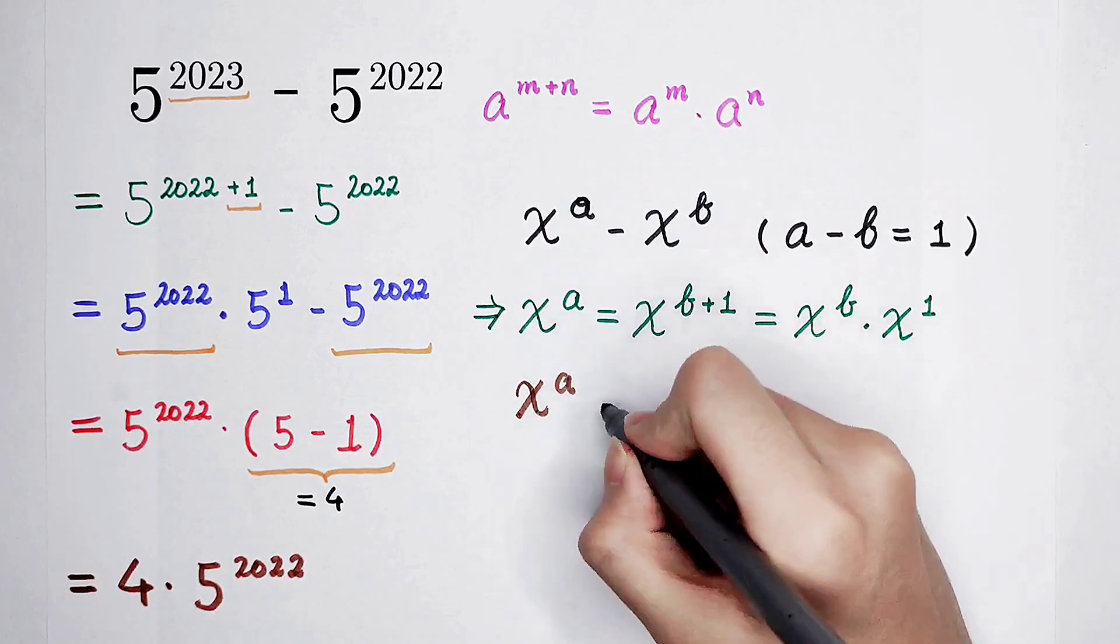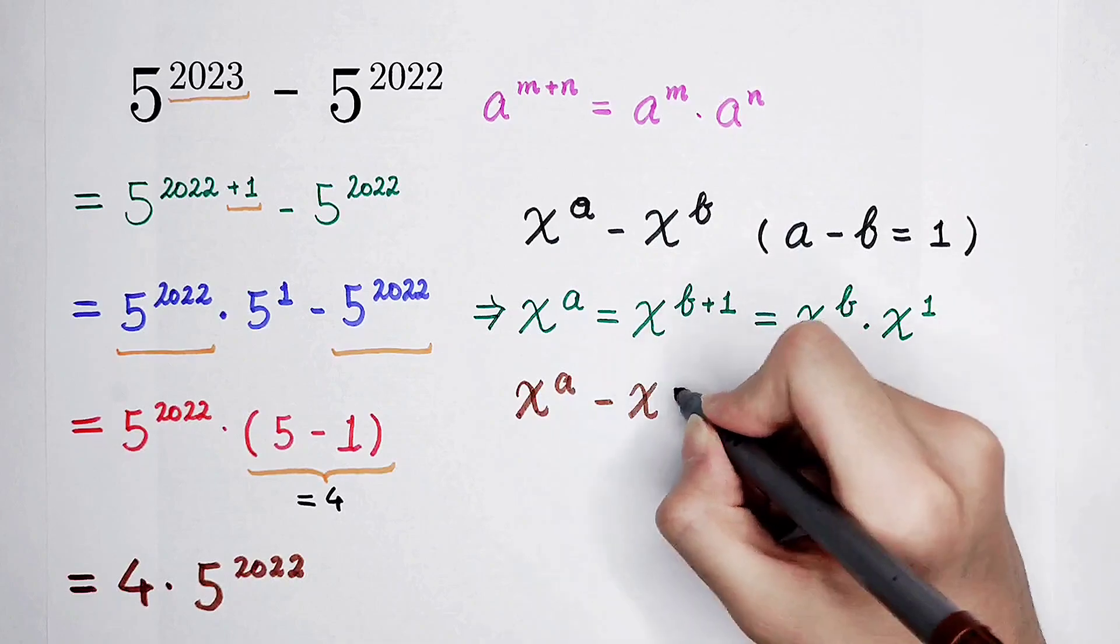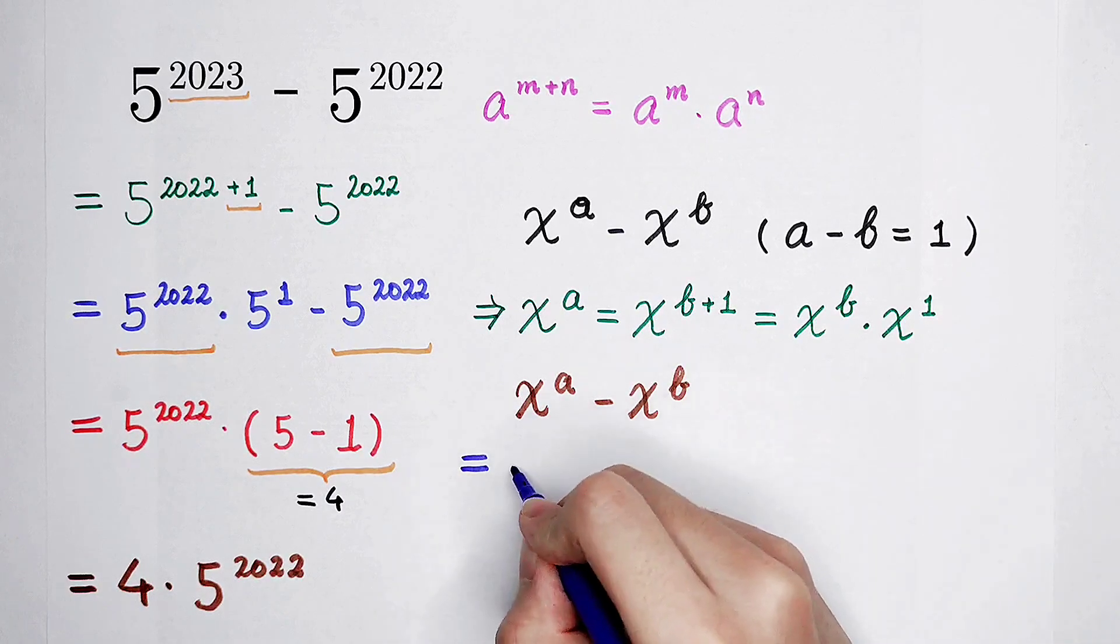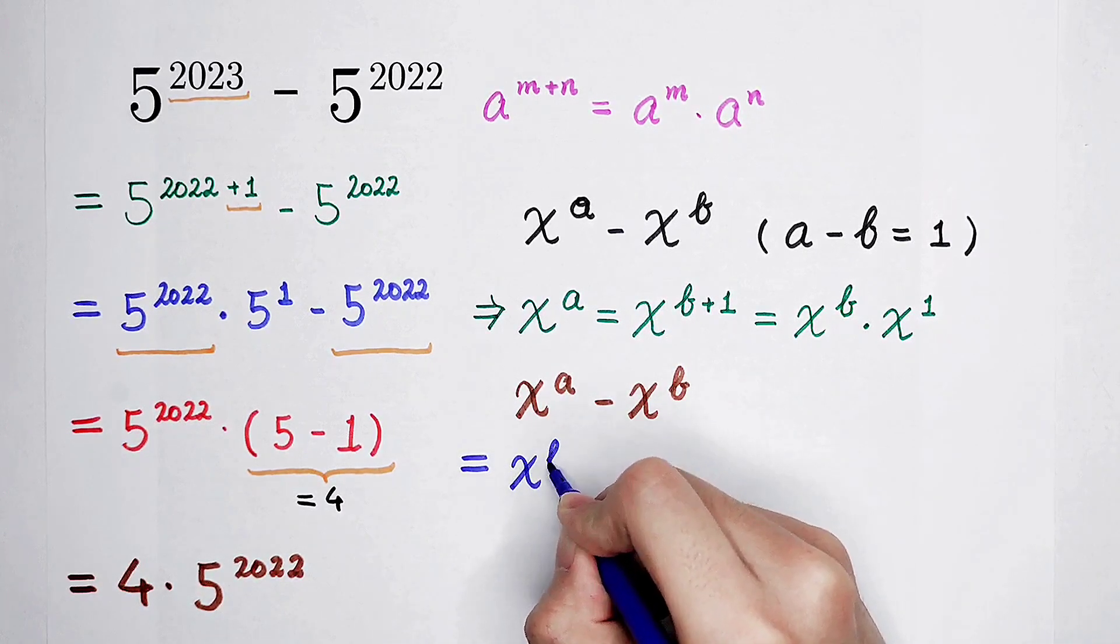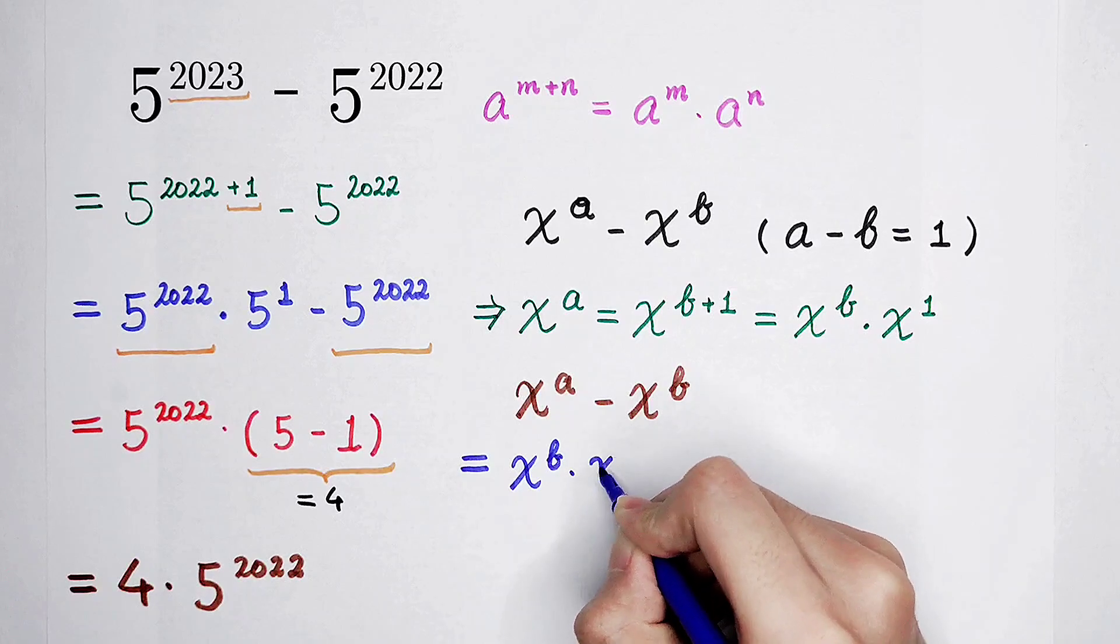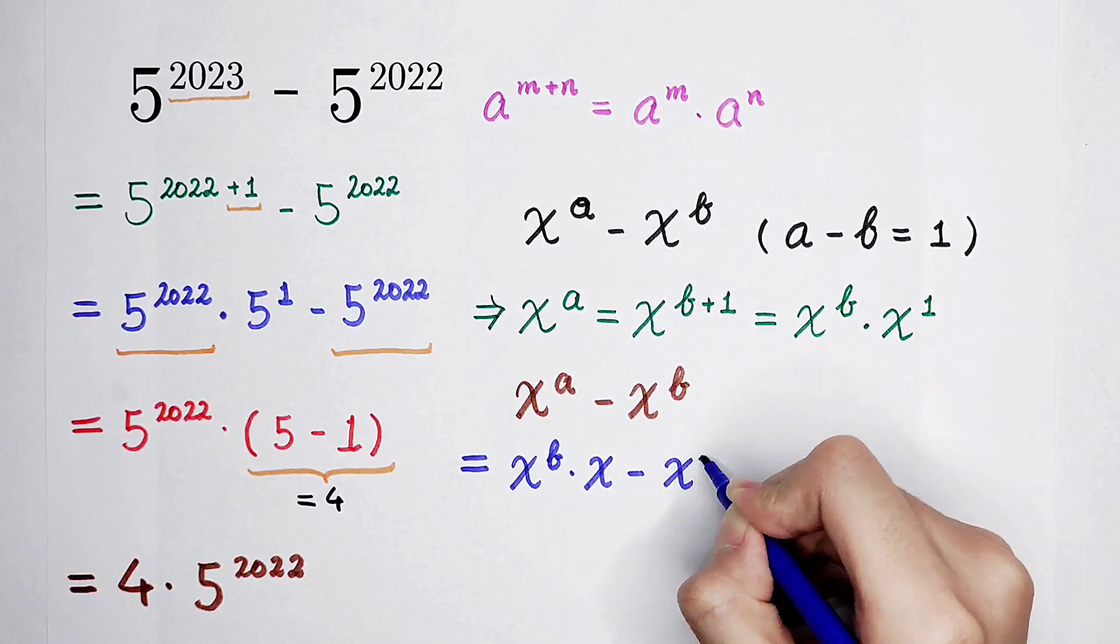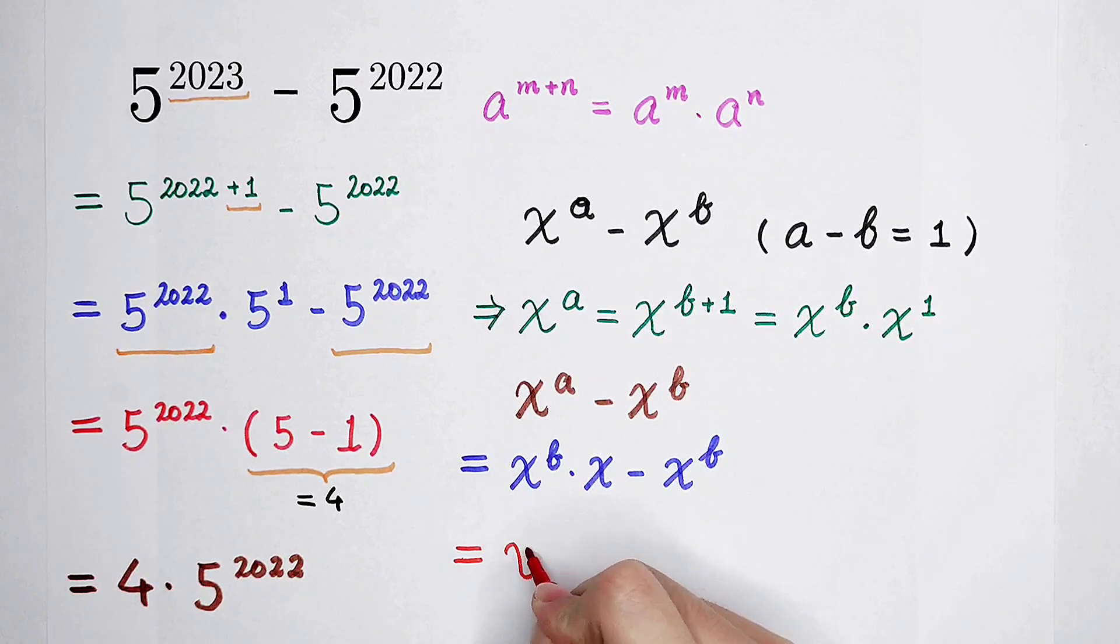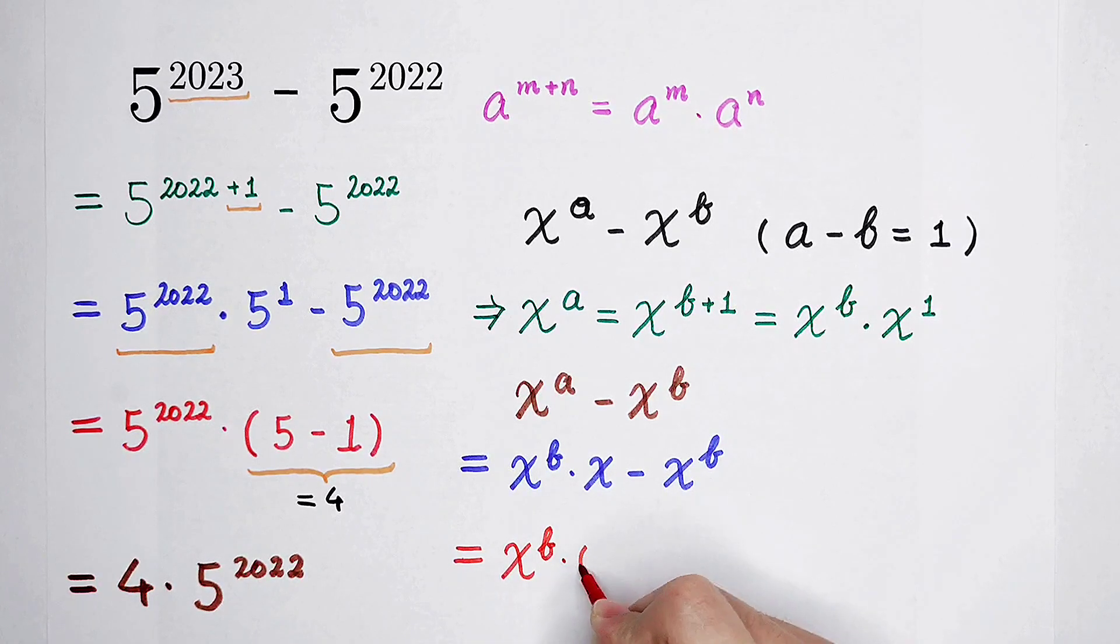So our x to the power of a then minus x to the power of b, it is just equal to x to the power of b times x, and then minus x to the power of b. Take out x to the power of b. It is x to the power of b times x minus 1.